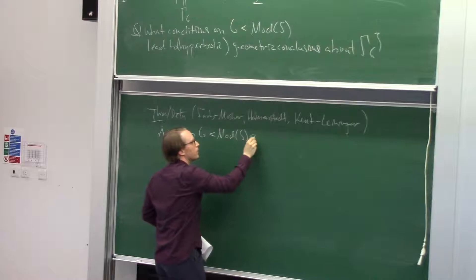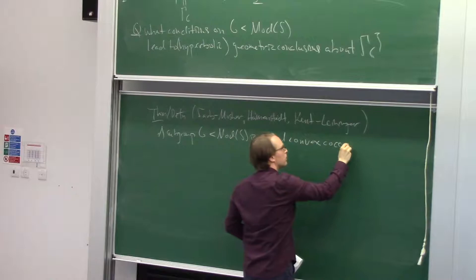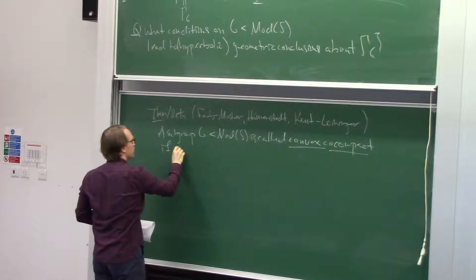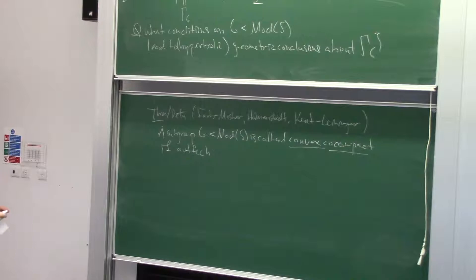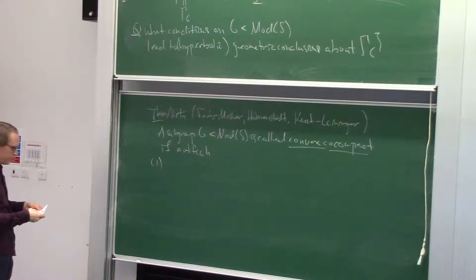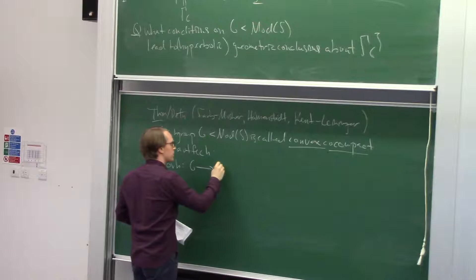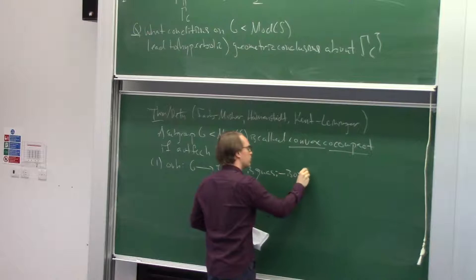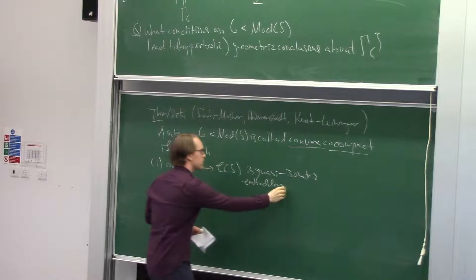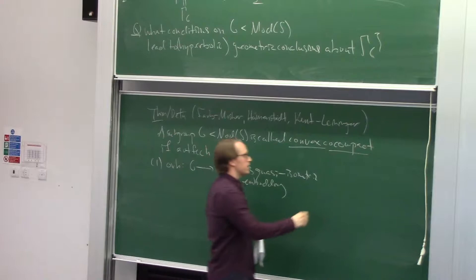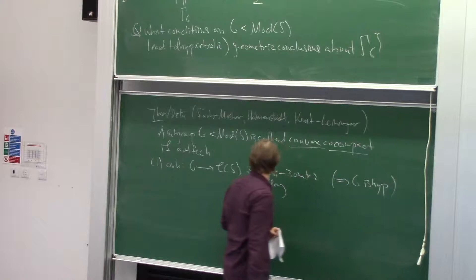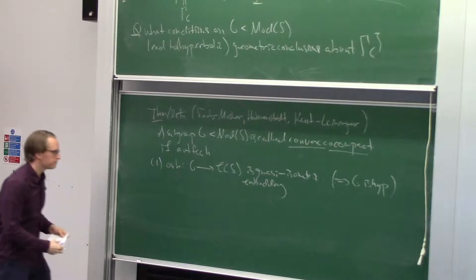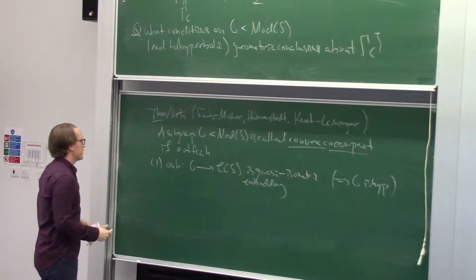The subgroup G of the mapping class group is called convex cocompact if any of the following equivalent conditions holds. The first one is that the orbit of the group in the curve graph is a quasi-isometric embedding. From this we can automatically see that G is a hyperbolic group, since we're quasi-isometrically embedding into this coarsely hyperbolic space, which is hyperbolic by Masur-Minsky. So we automatically get that G is a hyperbolic group.